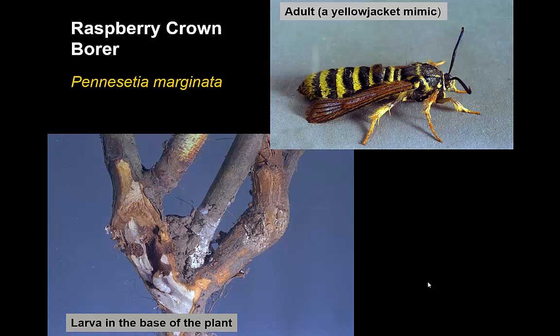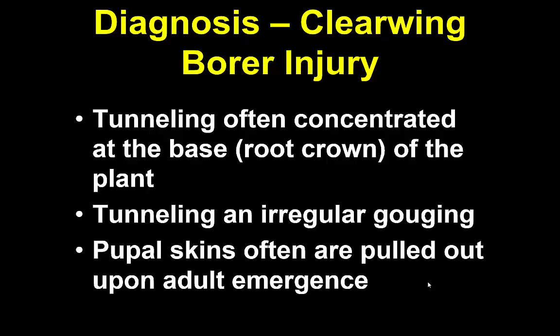Another species is the raspberry crown borer, found on raspberries, with larvae developing at the base of the plant. The adult looks more or less like a yellow jacket. To summarize clearwing borer injury: tunneling is often concentrated at the base — the root crown area — but also in the lower trunk and root system. They do not make a tunneling pattern as clearly distinctive as flat-headed or round-headed borers. It's irregular gouging, some just under the bark and some affecting the interior of the plant. You may also see pupal skins extruding from the plant, which provides a diagnostic sign.